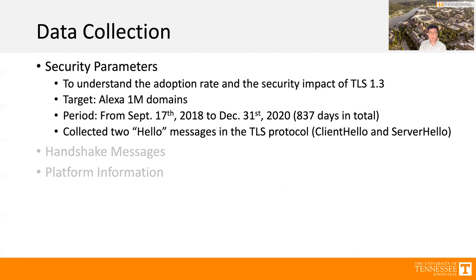We collected three types of datasets. The first is security parameters, collected to understand the adoption rate and security impacts of TLS 1.3. We targeted Alexa 1 million domains, and the dataset was collected from September 2018 to December 31st, 2020 — more than two years, around 800 days total. We accessed each of the Alexa 1 million domains and collected two hello messages in the TLS protocol: the client hello and server hello.